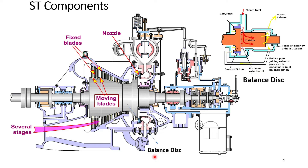In addition to this, there are many other components which we can see in this slide. This is the inlet side of the turbine where we have thrust bearings and radial bearings. This is the complete governing system of the turbine, which we will be discussing in another program.